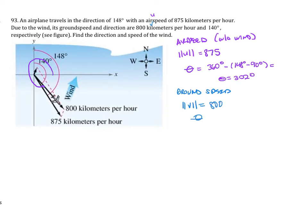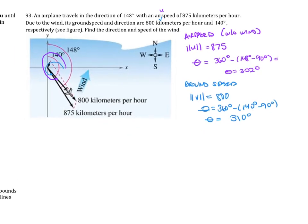And then theta is, again, that's 140 degrees, but we want this, right? That's the true direction of the airplane, but we want the directional angle. So that is going to be 360 degrees minus 140 degrees minus 90 degrees. So we find that theta is going to be 310 degrees. That's our important information we need.